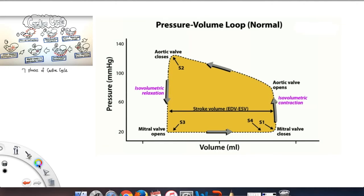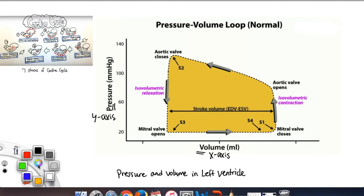So now let's compare this to the pressure volume loop curve. The pressure volume loop curve consists of the volume on the x-axis and pressure on the y-axis. And keep in mind we're looking at the pressure and volume in the left ventricle. So if we begin at the left bottom corner, we notice that when the mitral valve is open,